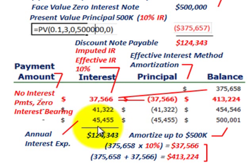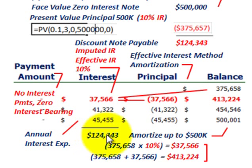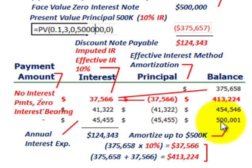We add each year's interest expense to the beginning balance to get the new balance, then multiply by the interest rate. We amortize the total interest on this note even though we're not paying any interest payments, based on the imputed interest rate of 10%, because that's what it would be worth if we had to borrow the cash on the open market. Total interest on the note is $124,343, amortized up to its maturity value of $500,000.